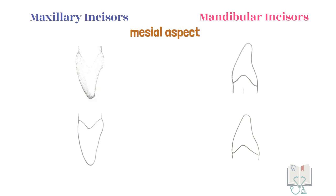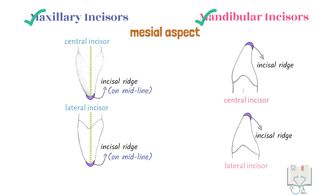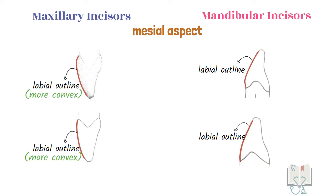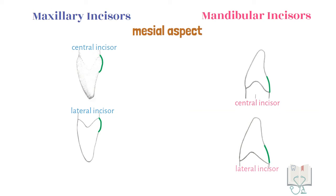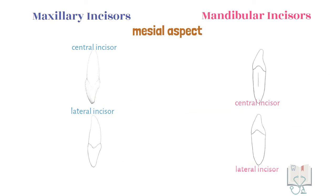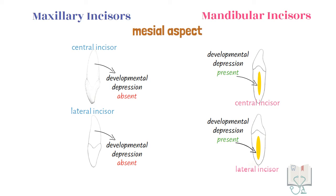From the mesial aspect, in both maxillary incisors the incisal ridge is on the midline axis of the tooth, whereas in both mandibular incisors the incisal ridge is lingual to the midline axis. The labial outline in maxillary incisors is more convex than in mandibular incisors. Similarly, in the lingual outline the cingulum appears more convex. The root surface in both maxillary incisors is smooth and convex with no concavities, whereas in mandibular incisors there is a developmental depression running along the long axis of the tooth.